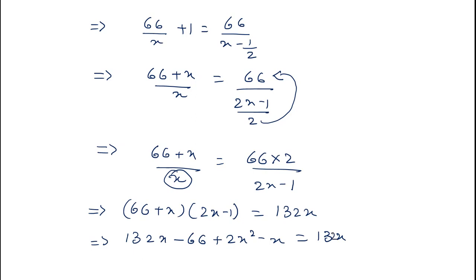Now from both the terms, 132x and 132x got cancelled. The remaining equation is 2x square minus x minus 66 is equal to 0, which gives you the value of x, x equal to 6 or minus 11 upon 2.